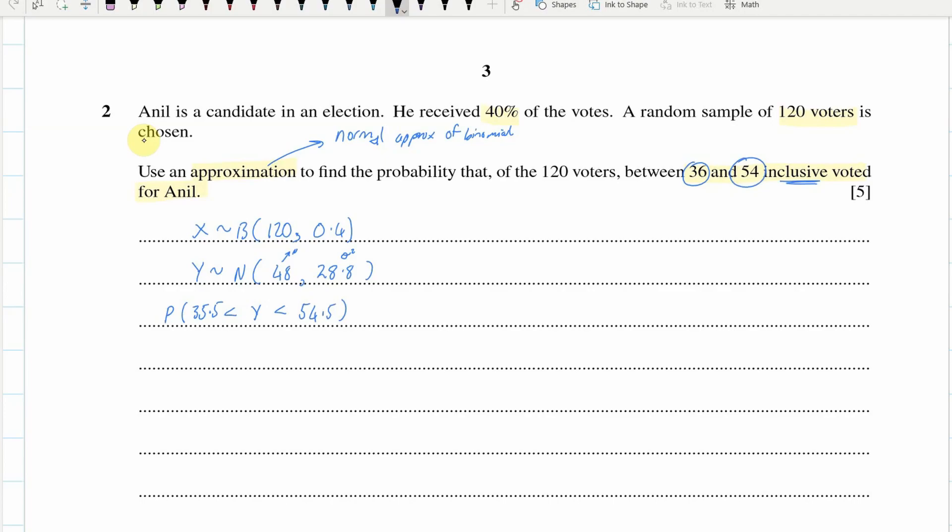And now what I'm going to do is I'm going to get my two Z values. So Z1 is going to be, we'll take that 35.5, subtract the mean, which we found to be 48, then divide it by the standard deviation, which is the square root of that 28.8 we got. And that gives me negative 2.329 to three decimal places. My Z2 is going to be equal to the 54.5, take away the mean, which is 48 once again, over the square root of 28.8. And I'm getting 1.211 for this.